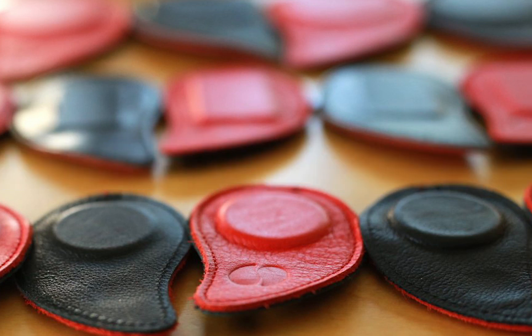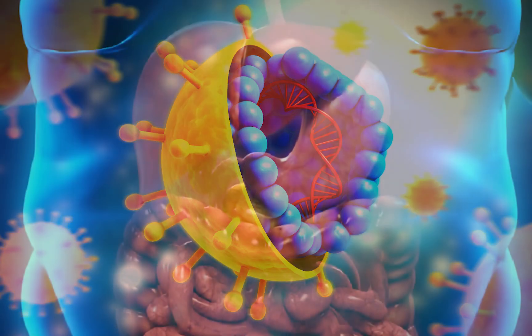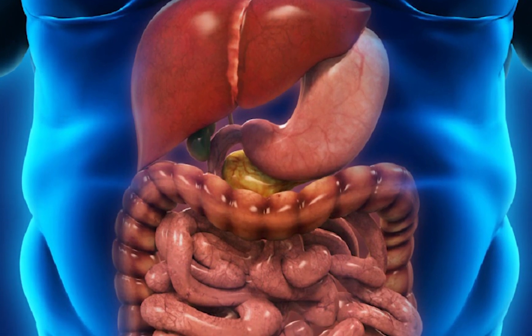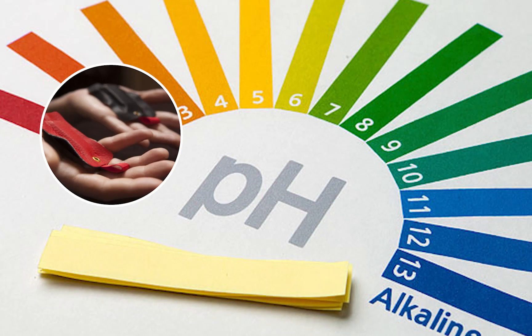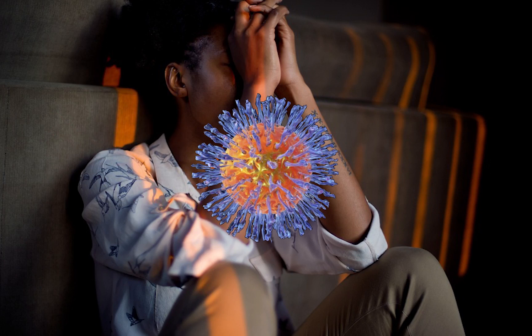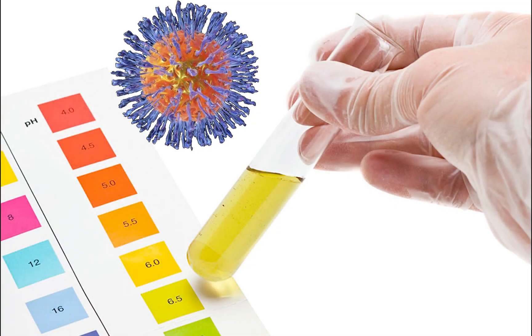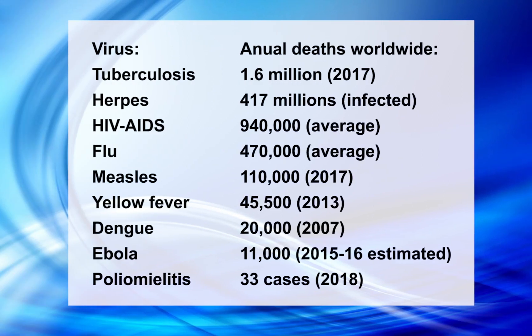According to Dr. Isaac Goiz Durán, viruses proliferate in acidic environments — when there is an acidification of an organ or tissue, infection can arise. It is enough to balance the pH with the indicated pair so that the organism can unfold its natural healing processes. This explains, for example, why the herpes virus is activated only in stressful situations: in this condition, the body's pH changes and the cell suffers from stress, allowing the virus to activate. Here is a list of some of the viruses that can be treated with biomagnetism and their incidence and mortality statistics.